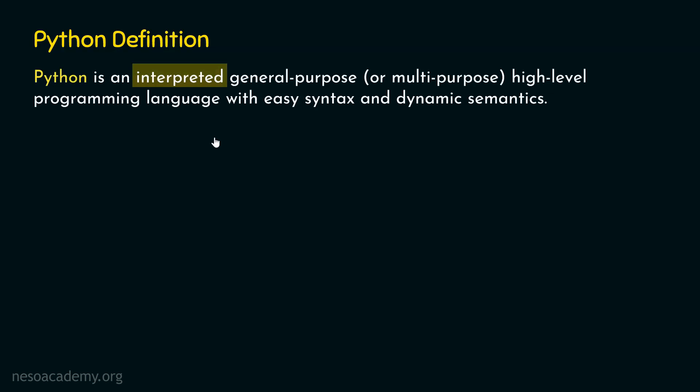There are two types of programming languages. One is called an interpreted programming language and the other is called a compiled programming language. An interpreted programming language uses an interpreter for its translation. On the other hand, a compiled programming language uses a compiler for its translation. Compiler and interpreter are translators — they translate code written in one programming language to code written in another.